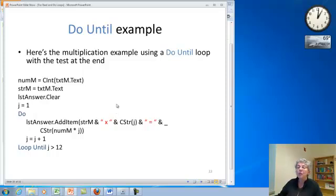So here's a multiplication example. Again, I'm using this same example to keep everything simple. Set up the same way, set j equal to 1, and we have the do. We have our same line that we're used to, and incrementing j, and we just loop until j is greater than 12.